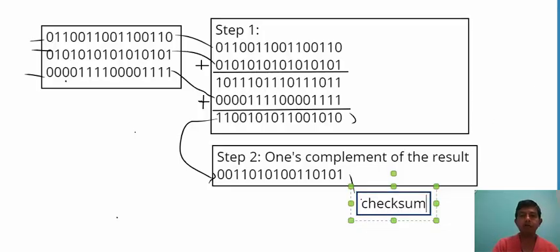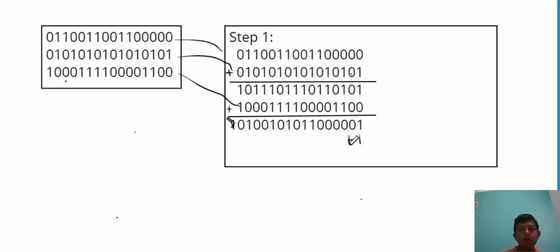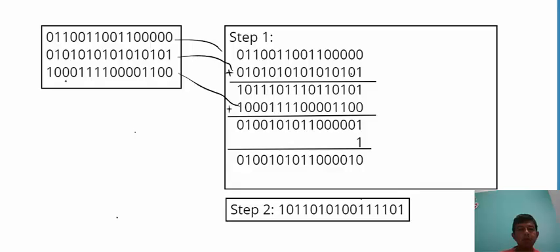Next we'll take an example with a carry. Again I have three 16-bit numbers. I add the first two numbers to get a result, then add the third number. Looking at this result, there is a carry — the result is 17 bits, so this extra bit is a carry. As per the process, we remove this carry and add it to the lowest significant bit. After this normal addition, whatever result we obtain is then one's complemented, and this is the full result of the whole process.